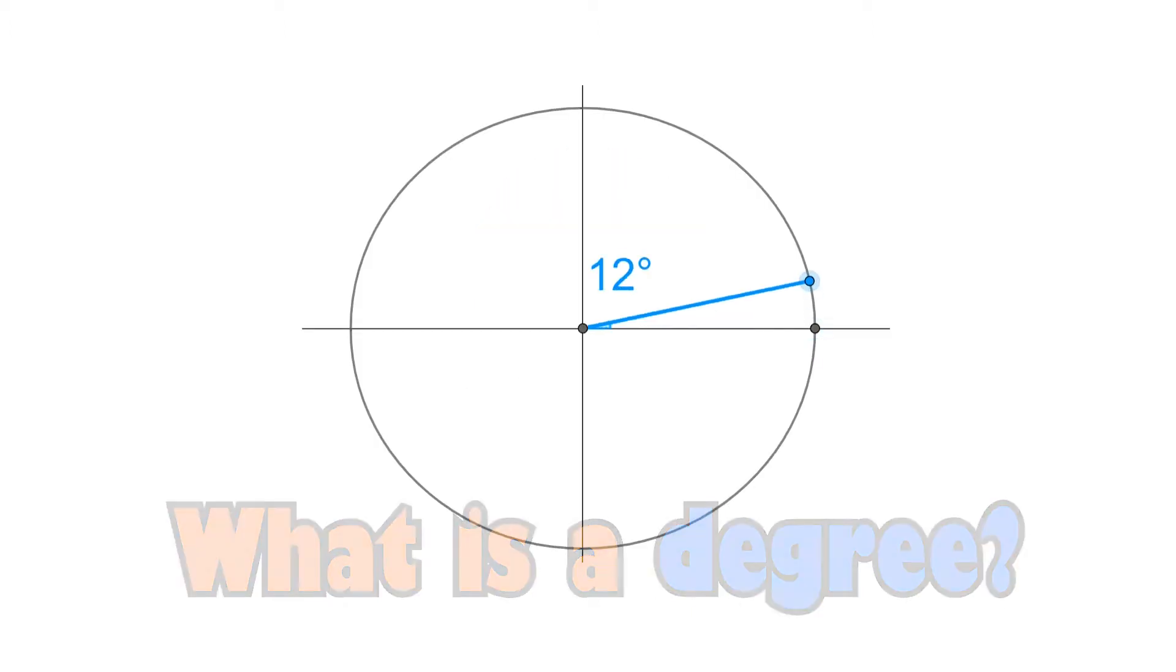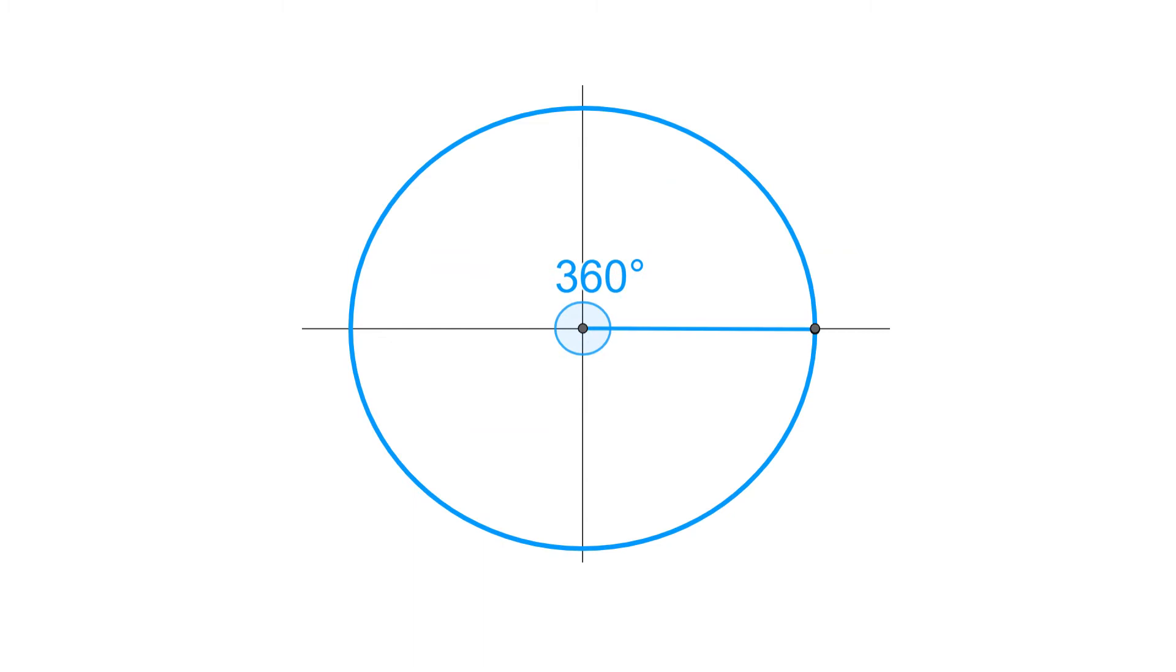Well, you say, a degree is a way to measure angles or rotation. 360 degrees is a full rotation, or a full circle. 180 degrees is a half circle. Right.